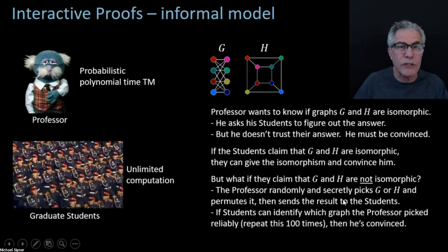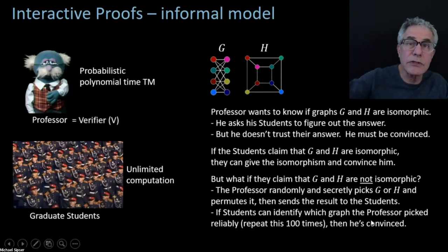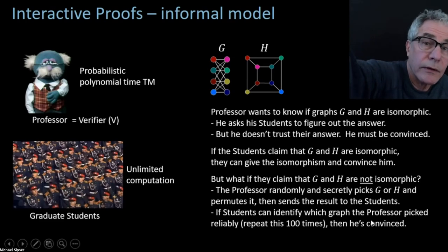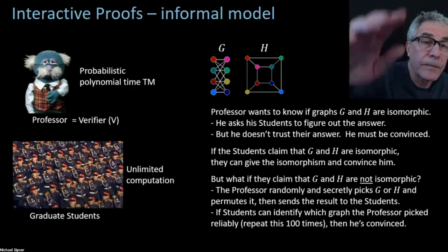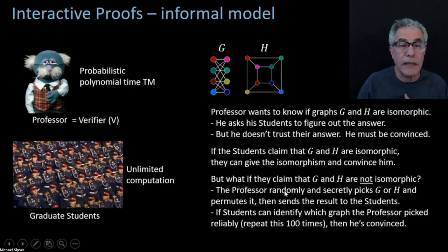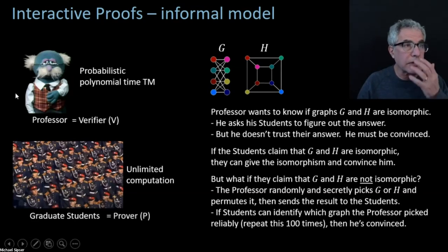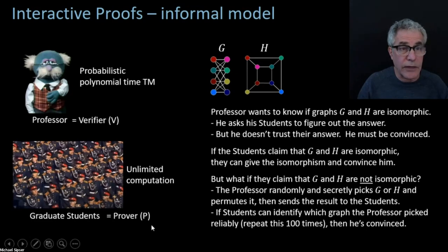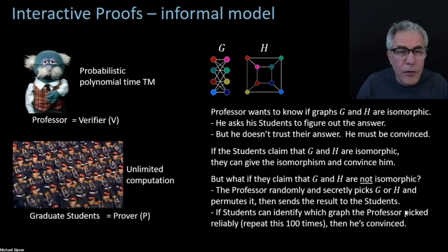Let's pause here and make sure we all understand this, because this is really important. The professor is going to play the role of the verifier; the graduate students play the role of the prover. Both the students and the professor can see the graphs. The professor is just picking one of them at random using a coin.